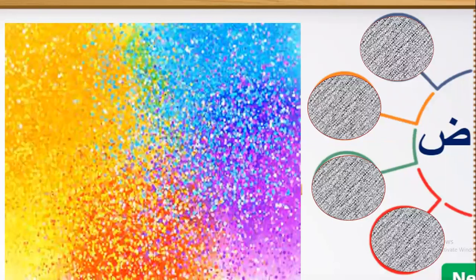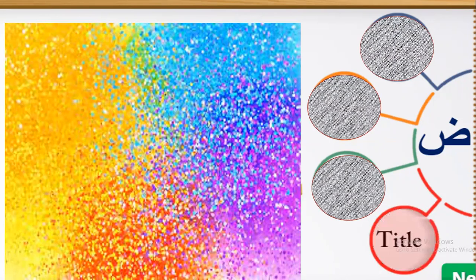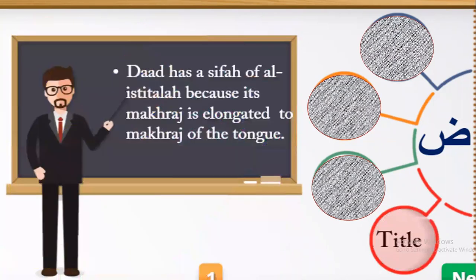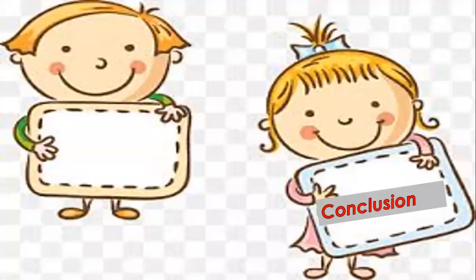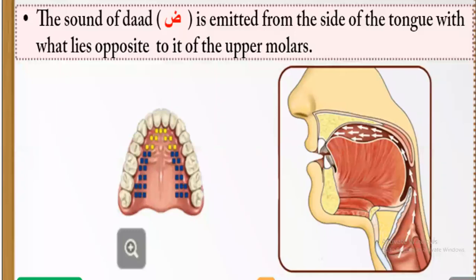The last point about letter Dad is its title — Dad has a sifa of al-Istitala because its makharaj is elongated to the makharaj of the tongue. Conclusion: the sound of Dad is emitted from the side of the tongue with what lies opposite to it of the upper molars.